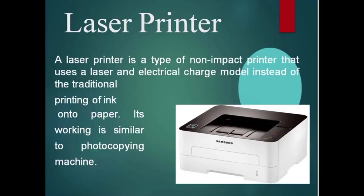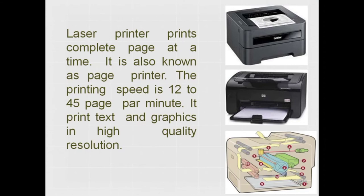The first type of non-impact printer is the laser printer. A laser printer uses a laser and electric charge model instead of traditional printing of ink onto the paper. Its working is similar to a photocopying machine. It doesn't produce any sound while printing. Laser printers print a complete page at a time — not a single line or word — and are also known as page printers.